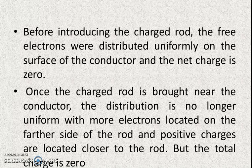Before introducing the charged rod, the free electrons were distributed uniformly on the surface of the conductor and the net charge was zero. When the charged rod is not near, the whole body is neutral — positive and negative charges are equal. Once the charged rod is brought near the conductor, the distribution is no longer uniform. More electrons are located on the far side from the rod and positive charges are located on the closer side, but the total charge is still zero.